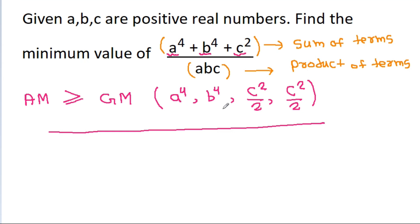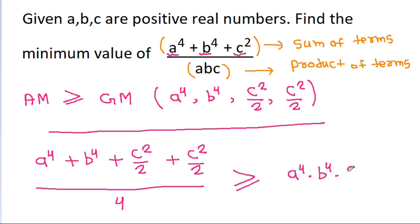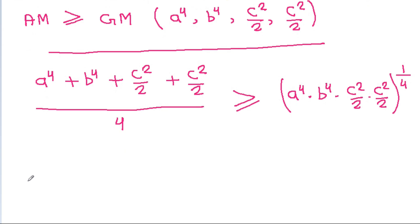The AM equals the sum of terms — a⁴ + b⁴ + c²/2 + c²/2 — divided by the number of terms, which is 4. This is greater than or equal to the GM, which equals the product a⁴ · b⁴ · (c²/2) · (c²/2), all raised to the power 1/4.